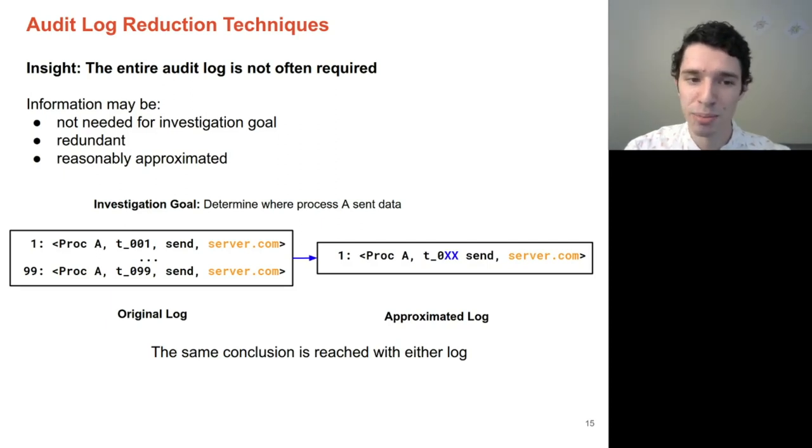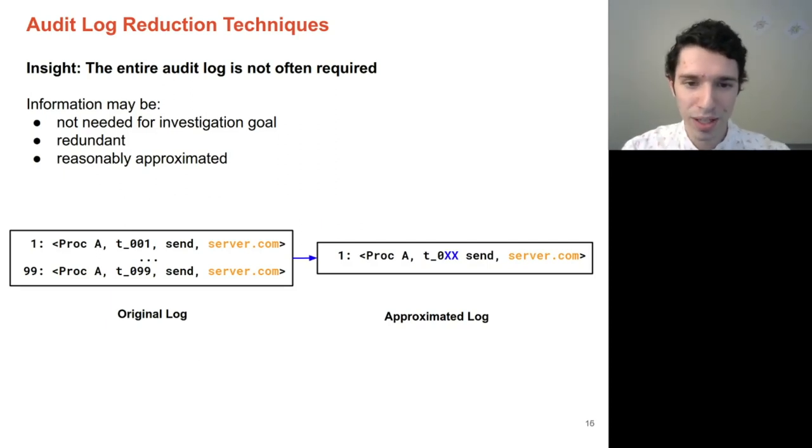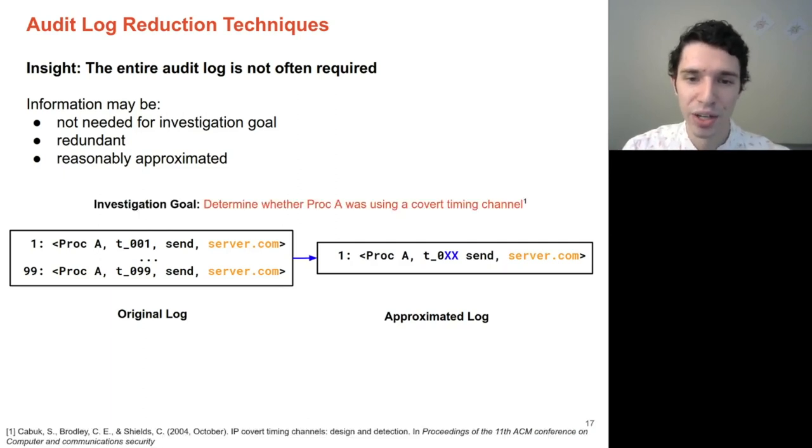However, let's imagine another scenario. Let's imagine that you are a bit less concerned that server.com is speaking with process A and you're a bit more concerned that process A might be exfiltrating data through other means. Specifically, you're worried that process A might be using a timing channel that depends on the delays of the network packets that it sends out.